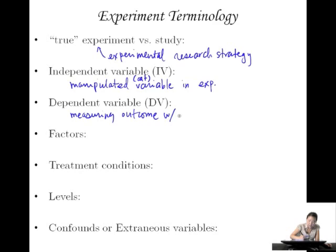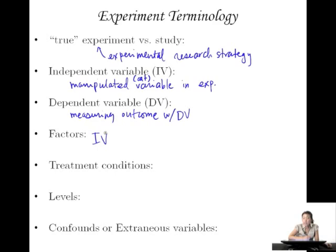We measure the outcome with the DV — this is how we measure the outcome of an experiment or a study, and that's called a dependent variable. Factors are just a different name for independent variables. So if you have two factors, that means you had two IVs; three factors means three IVs. Factor is just another name for IV.